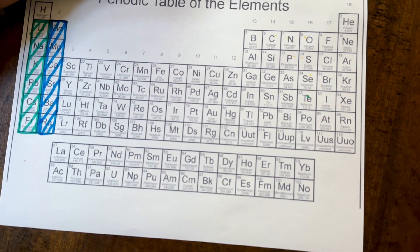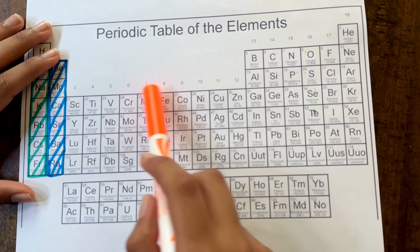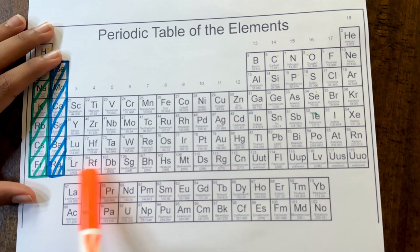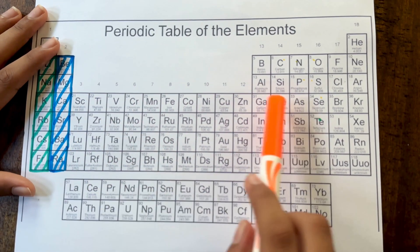Next, we're going to be moving to our transition metals. Our transition metals are located in this huge rectangle. Basically,